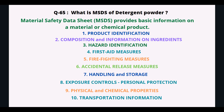What is the MSDS of detergent powder? Material Safety Data Sheet. MSDS provides basic information on a material or chemical product, including: product identification, composition and information on ingredients, hazard identification, first aid measures, firefighting measures, accidental release measures, handling and storage, exposure control, personal protection, physical and chemical properties, and transportation information.